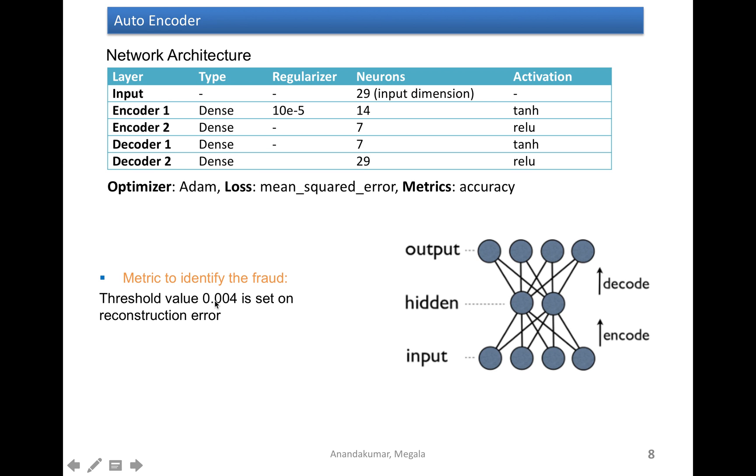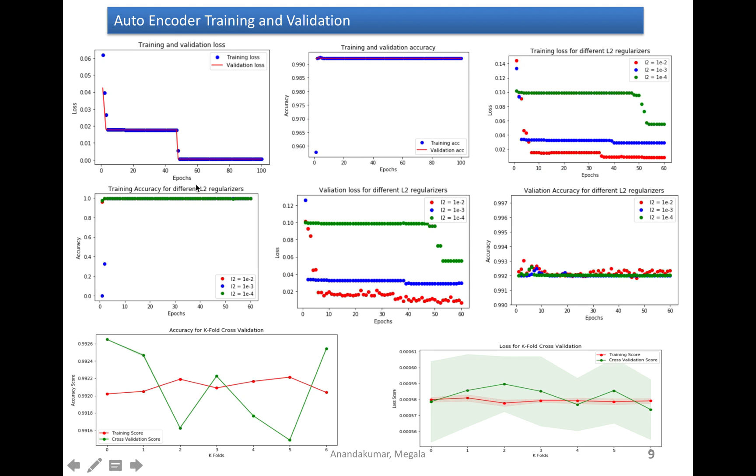I kept the threshold value of 0.004 on the reconstruction error. When the reconstruction error is beyond this value, then it is considered as a fraud transaction. And here also, I observed similar metrics. That means training and validation loss during my training process. And I did hyperparameter tuning on my L2 regularizers. And I did k-fold cross-validation.